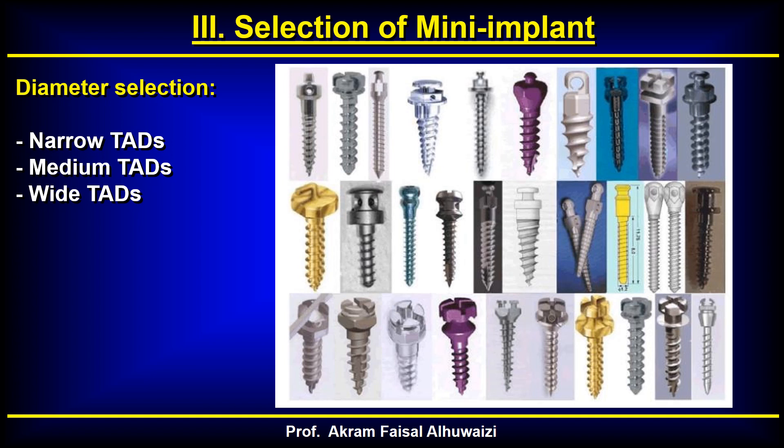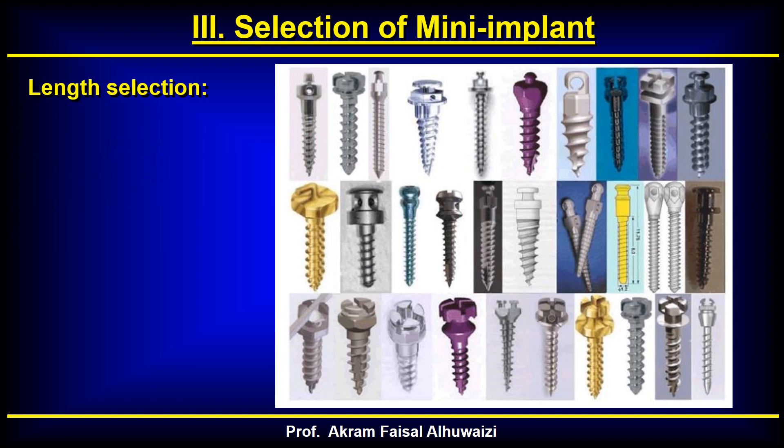Narrow TADs are generally used in the lower incisor region, where the cortical plate is thin and space between teeth is narrow. Medium-sized ones are placed in buccal areas and the palatal side of the upper and lower alveolar bone. Wide ones are placed in tough, thick cortical plate areas like the retromolar area. Regarding length, if cortical bone is very thin, we rely on cancellous bone for primary stability, requiring a longer TAD.